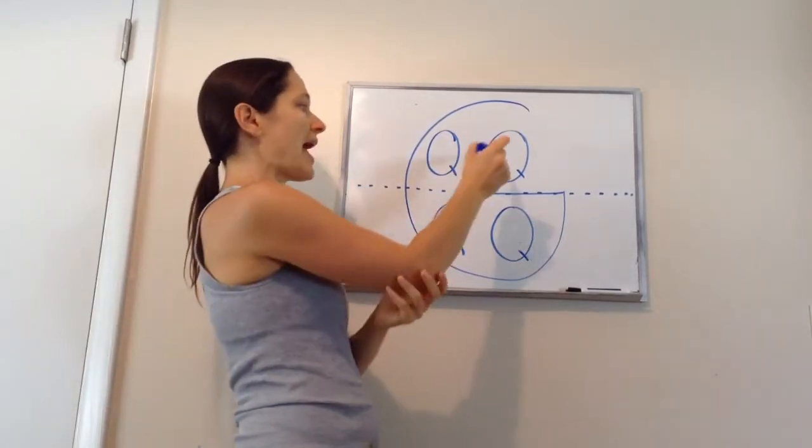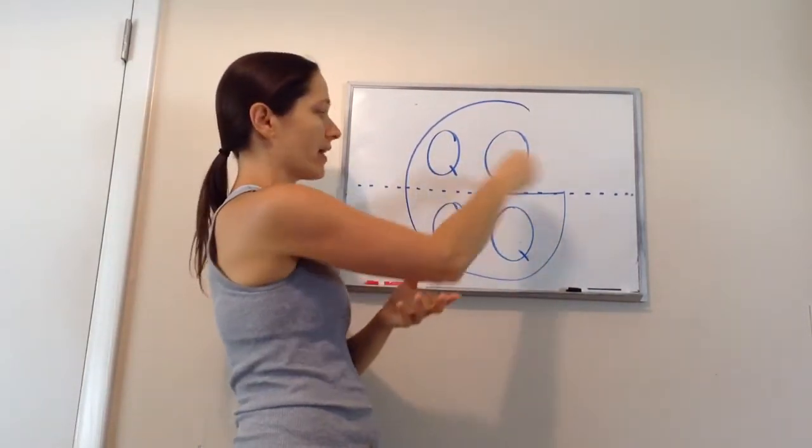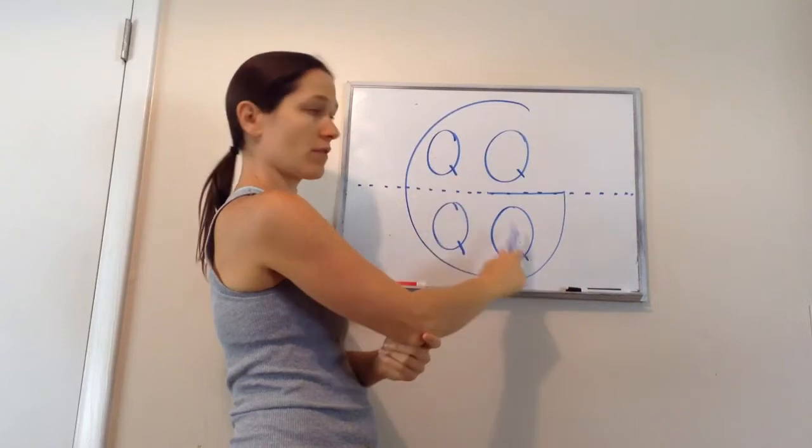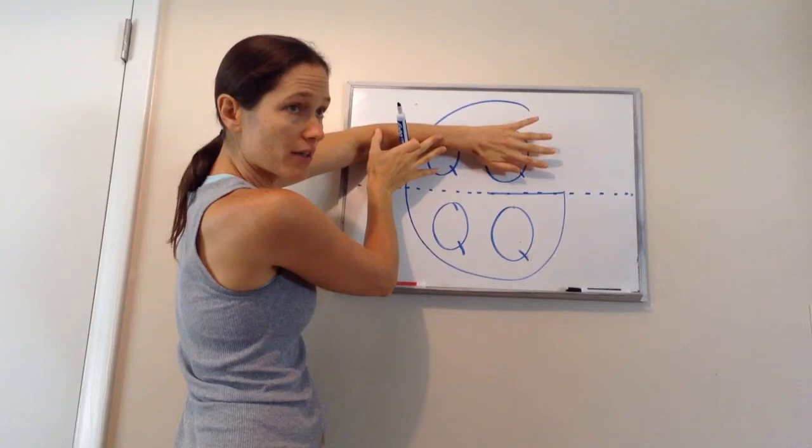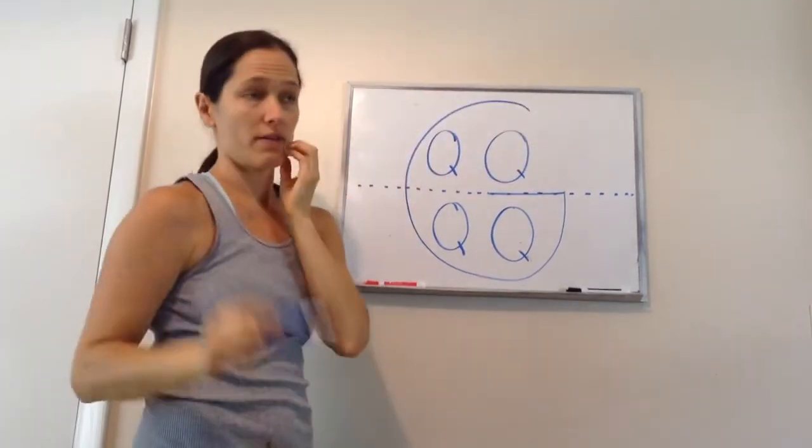Now, if I ask you the question, how many quarts are in a gallon? Four. Very good. How many quarts are in a half gallon? Two. Very good.